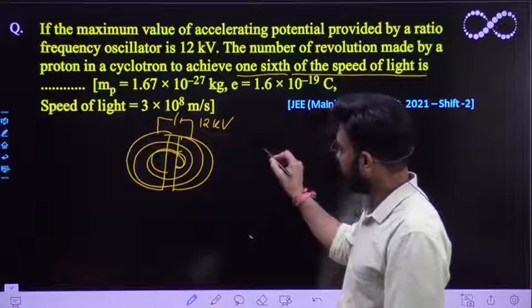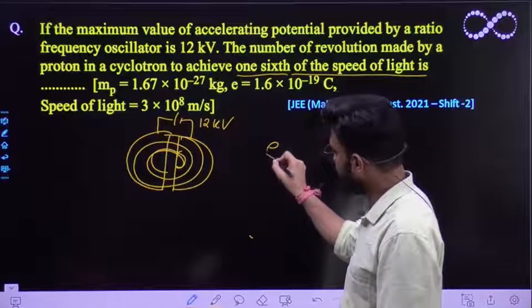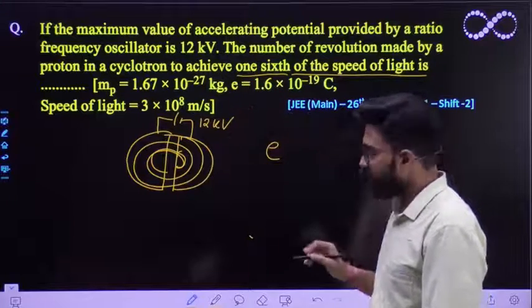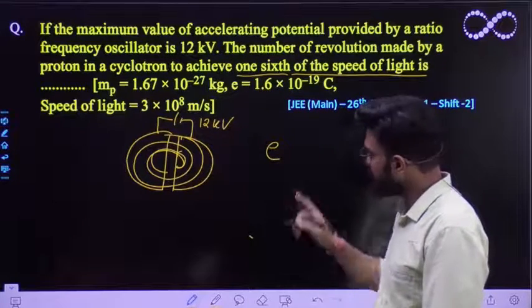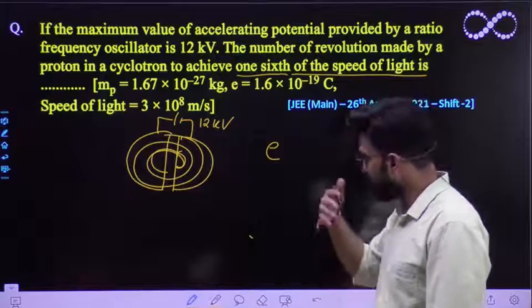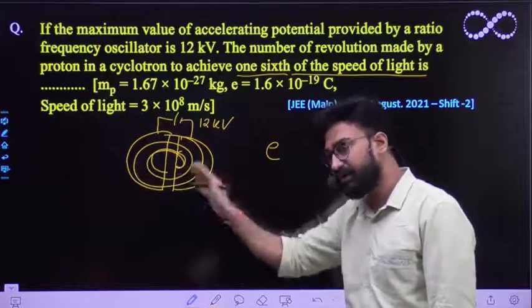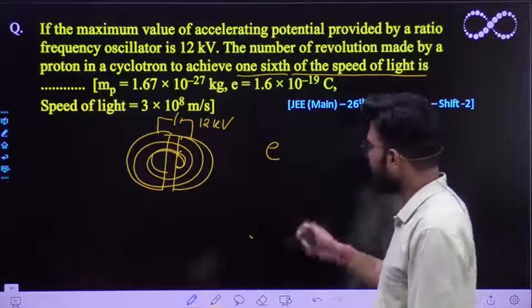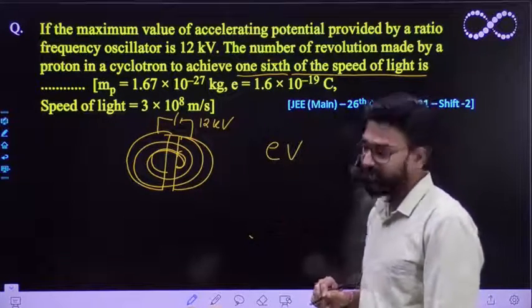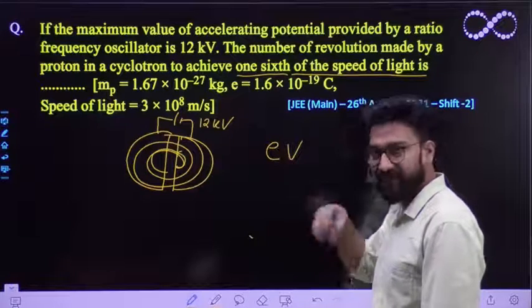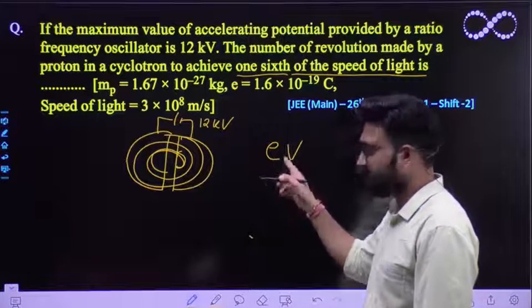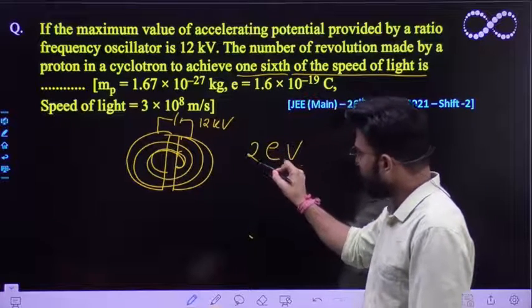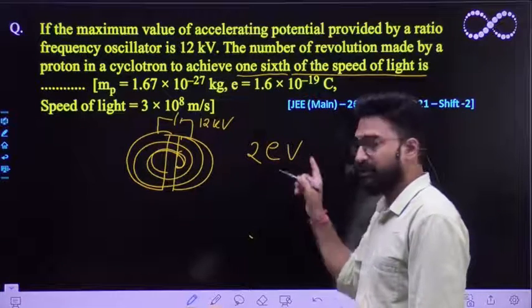So that means if a charge particle whose charge is E which is also given to you which is a proton over here, so that means this cyclotron will work on it and this work done would be equivalent to Q into V where V is a potential difference. Again this is for half revolution. This is work done for half revolution; for one complete revolution it would be equal to 2Q into V.